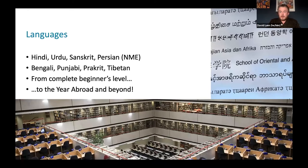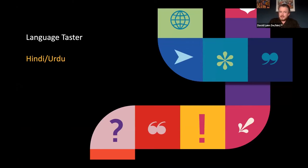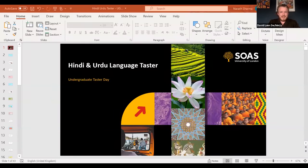The languages we offer related to South Asia include Hindi, Urdu, and Sanskrit, as well as Persian — which has a long-standing presence in South Asia, taught by our colleagues in the Near and Middle East section. We also offer, where feasible, courses on Bengali, Punjabi, Prakrit and Tibetan. We offer them from beginners level right through to the year abroad and beyond, so by the time you return from your third year, you're able to use these languages to quite a high level and engage with texts — written, cinematic, or otherwise. I'll now pass over to my colleague Naresh Sharma for the Hindi-Urdu taster.